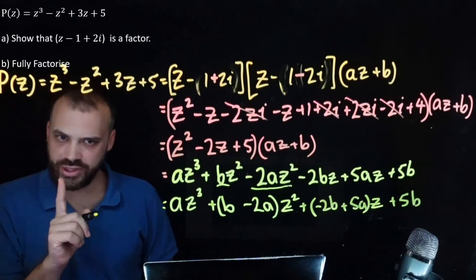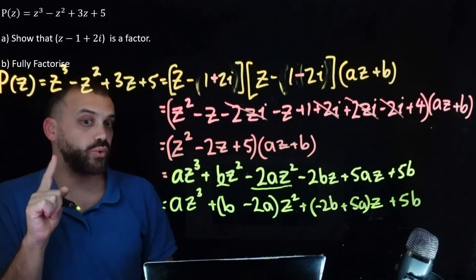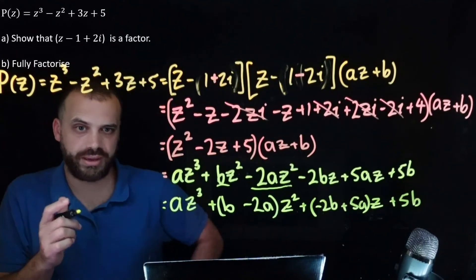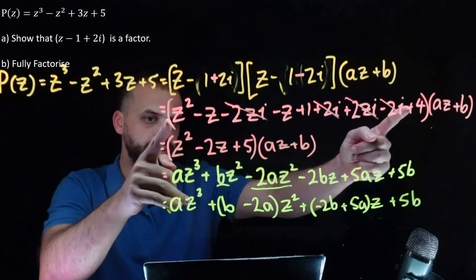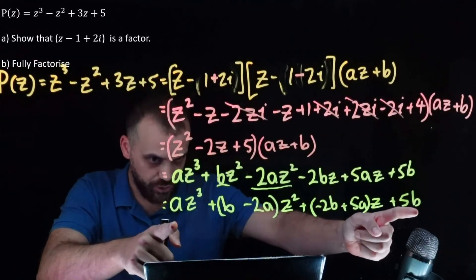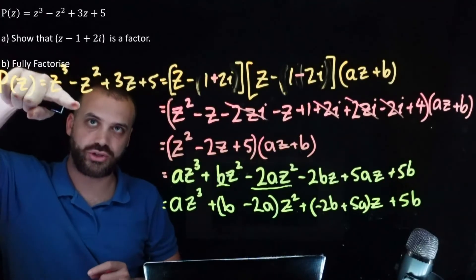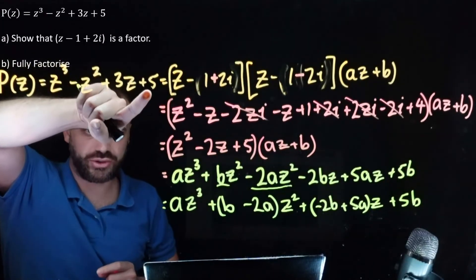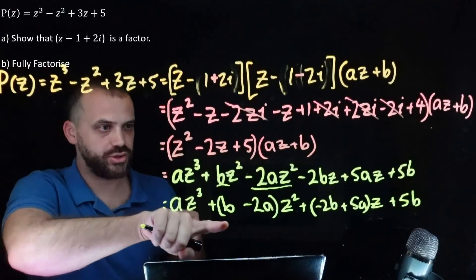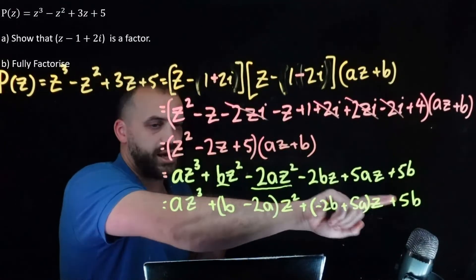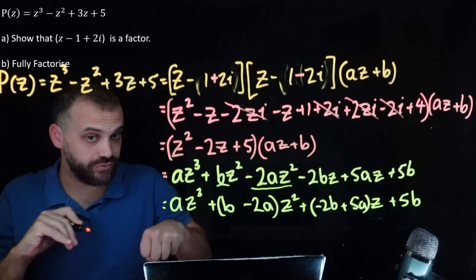This is where we look at our coefficients and equate them, because we said this equals this equals this. What we have on one side is a cubic in z cubed, z squared, z, and a constant — and here we have the same. Now we equate our coefficients.